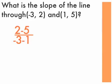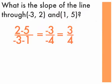Now we subtract: 2 minus 5 is negative 3, and negative 3 minus 1 is negative 4. A negative over a negative is a positive, so negative 3 over negative 4 is the same as positive 3 over positive 4.